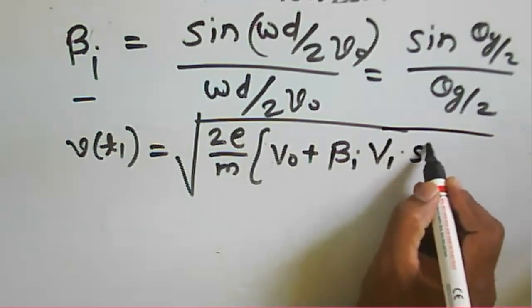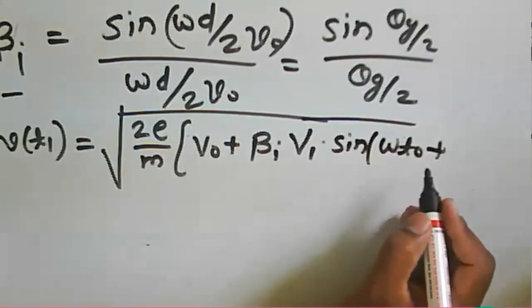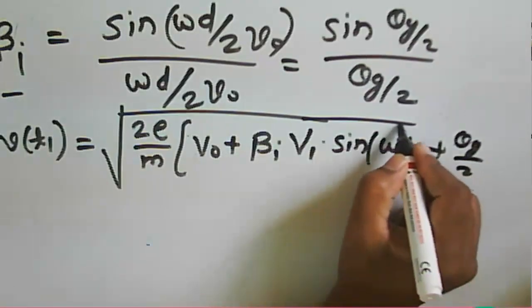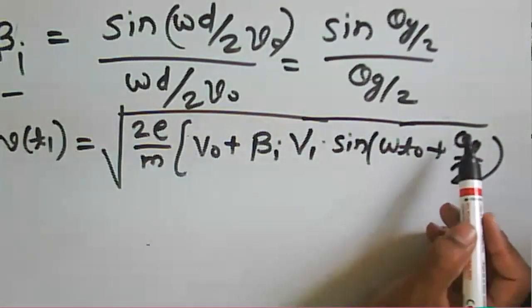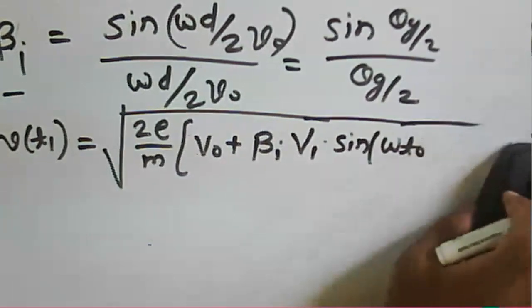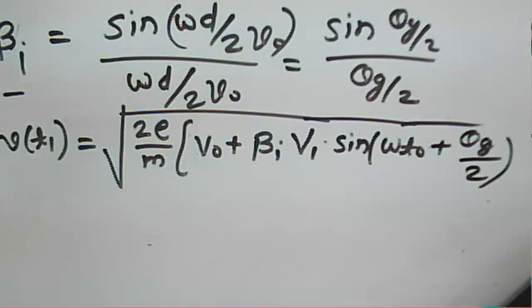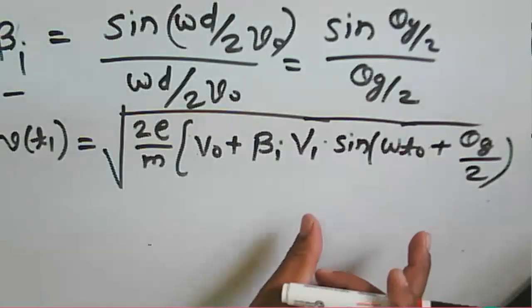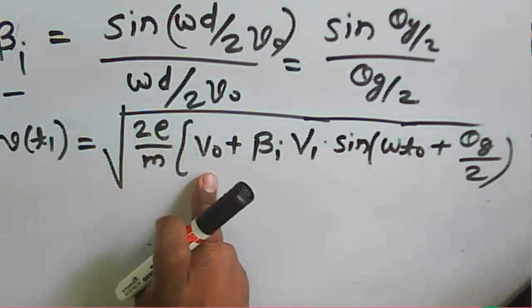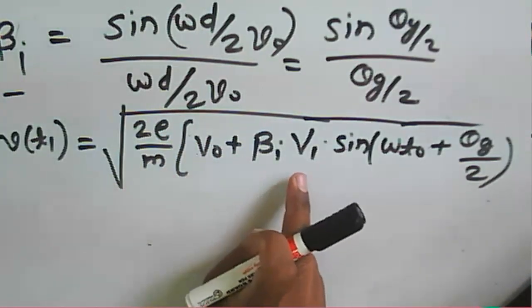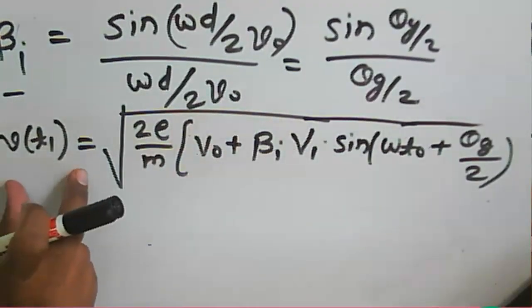The exit velocity v(t1) is expressed as: v1 = v0 plus beta_i times v1 (the input signal amplitude), multiplied by sine of (omega*t0 + theta_g/2). Here v0 is the DC beam voltage, beta_i is the beam coupling coefficient, and theta_g/2 is the transit gap angle.